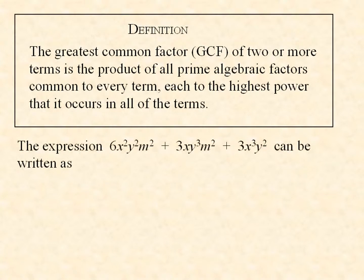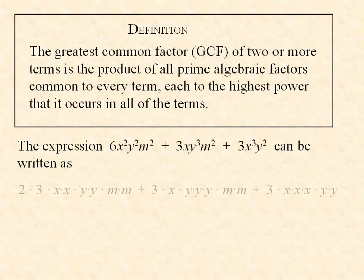This expression, 6x²y²m² + 3xy³m² + 3xy³y², can be pulled apart if we factor each of the numbers into its prime factorization and rewrite the variables without exponents. We get this long expression, which consists of three terms. The greatest common factor has to consist of as many factors as possible that belong to each of the terms.